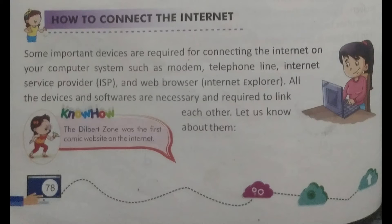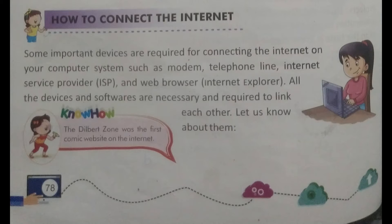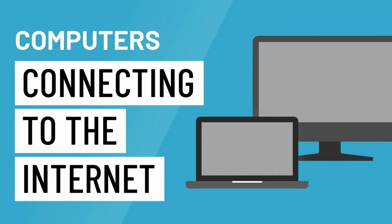Look at your textbook and let's read out the paragraph: 'Some important devices are required for connecting the internet on your computer system, such as modem, telephone line, internet service provider, and web browser. All the devices and software are necessary and required to link to each other.' So this paragraph is about how to connect our computer to the internet.